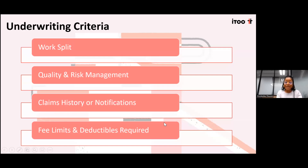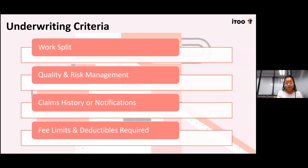The work split is particularly important in accounting and engineering spaces, where professionals don't only do one set of work. An accountant could be an auditor auditing financial institutions, which changes the risk profile. We ask for a percentage split of work so we can understand where the high exposure lies. We also look at quality and risk management to understand how the professional runs their business, what risk mitigation factors are in place, what processes and procedures they follow, and what checks and balances exist.